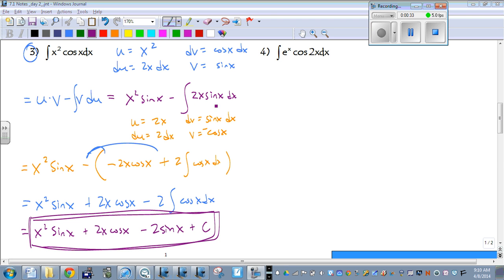2x is going to become our u, sine of x dx is our dv, so we end up with du equals 2dx and v is negative cosine of x.